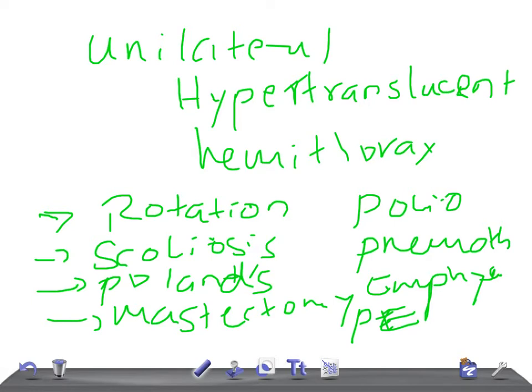So these are the causes for unilateral hypertranslucent hemithorax: rotation, scoliosis, Poland syndrome (congenital absence of pectoralis muscle), pneumothorax, polio, emphysema, pulmonary embolism, and McLeod syndrome. Thank you so much for watching this video. Take care.